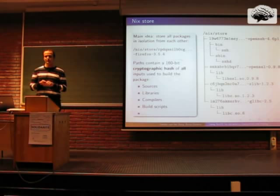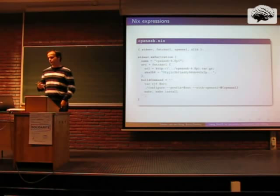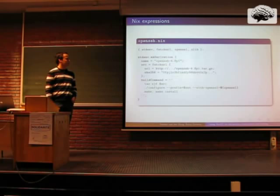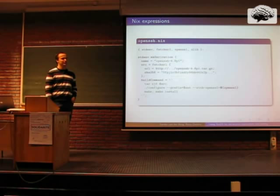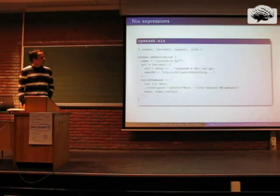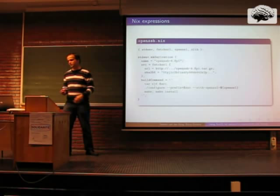In the Nix package manager, you use Nix expressions. We have our own purely functional language which you can use to describe how packages are built from source code. In this slide I have an example showing an expression for OpenSSH, a secure shell server. Essentially this expression is a function — the function header takes some arguments which are build-time dependencies. To build OpenSSH, you need the OpenSSL library and the zlib library. In the body, we call the makeDerivation function, which is basically the Nix way of saying we want to build something from source code.